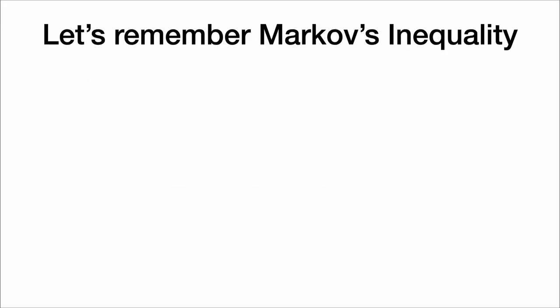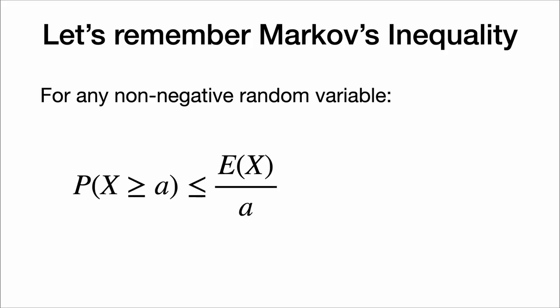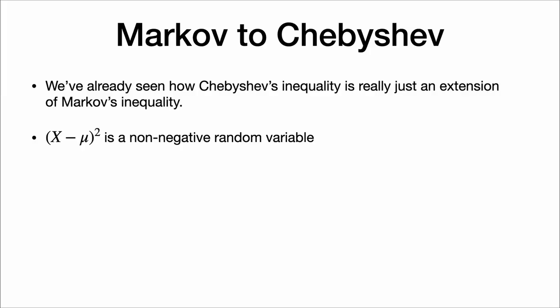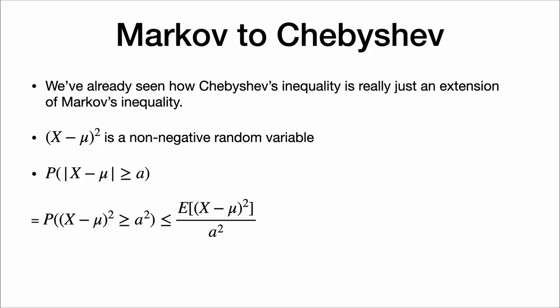Let's remember Markov's inequality, which states that for any non-negative random variable, the probability that that random variable is at least a is less than or equal to the expected value of x divided by a. When developing Chebyshev's inequality, we saw that it was really just an extension of Markov's inequality. The random variable (x minus mu) squared is non-negative, so we can apply Markov's inequality to it to find the probability that x is at least a away from mu. That's what Chebyshev's inequality is.